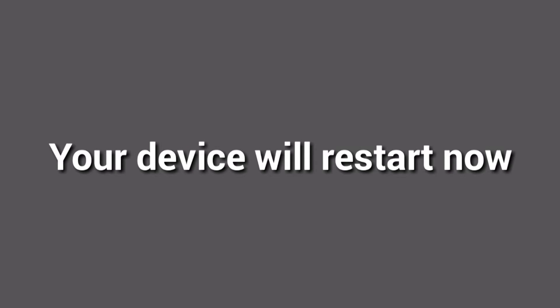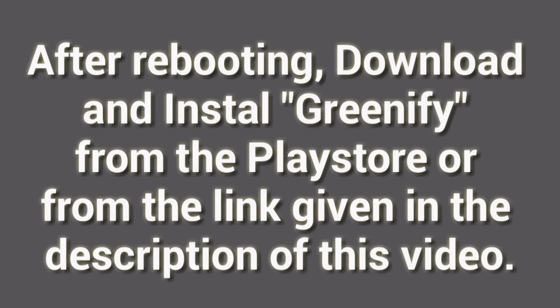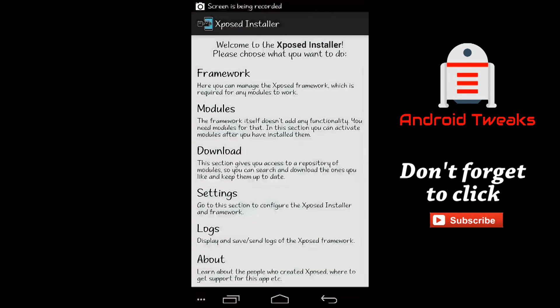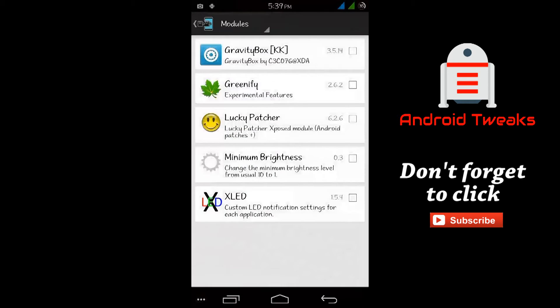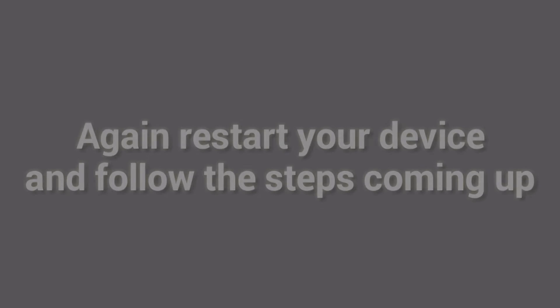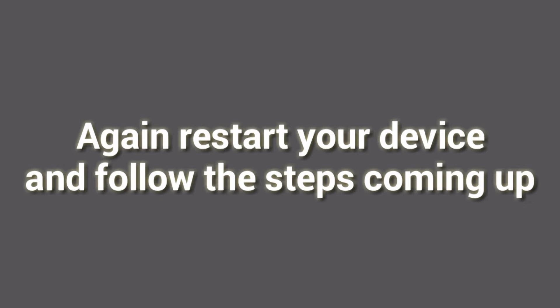After rebooting, download and install Greenify from the Play Store or from the link given in the description of this video. Now open Xposed Installer and tap on Modules. Checkmark Greenify. After checkmarking Greenify, restart your device.